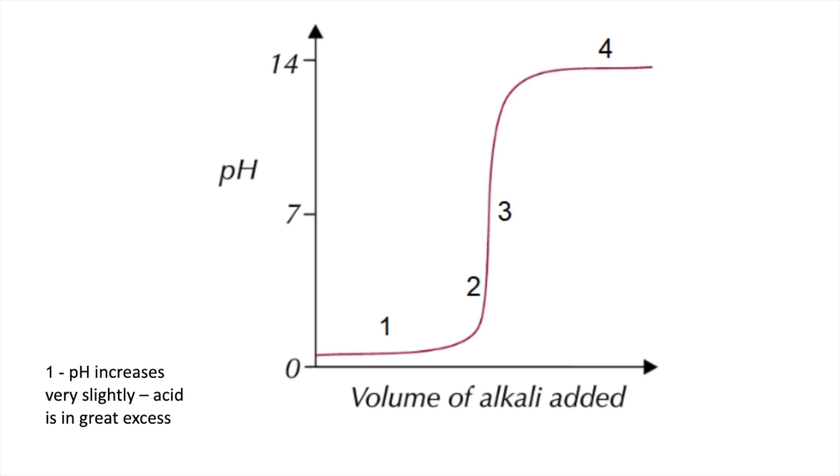The pH increases very slightly because the acid's in great excess. When you get to zone 2, the pH is increasing more quickly now. The acid's no longer in large excess, so each drop of base causes a sharp rise in pH.